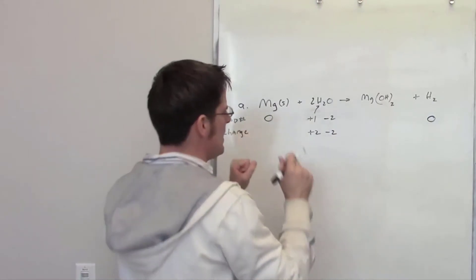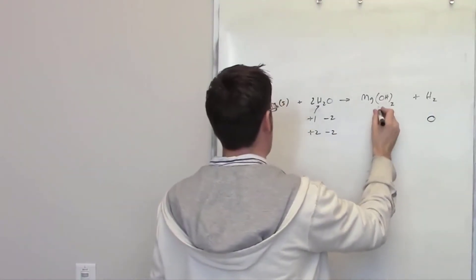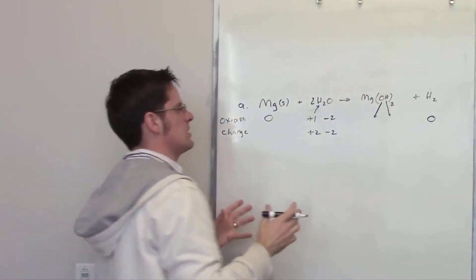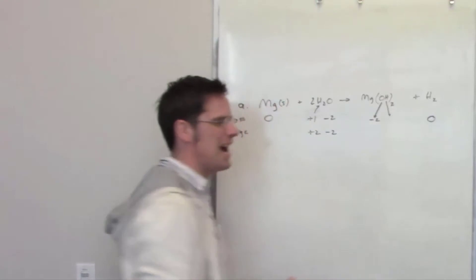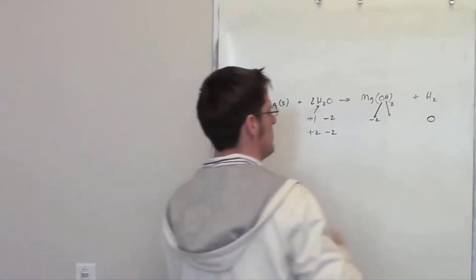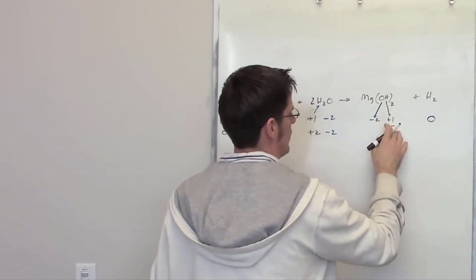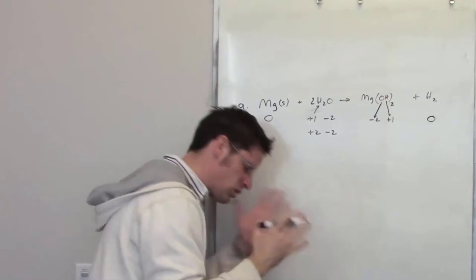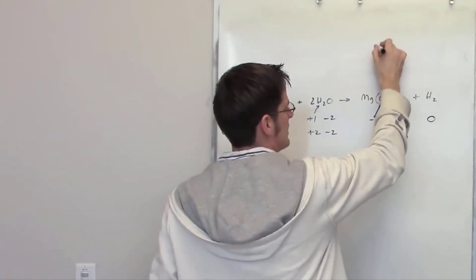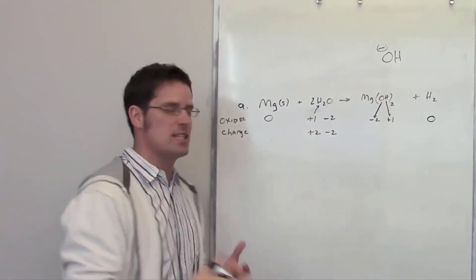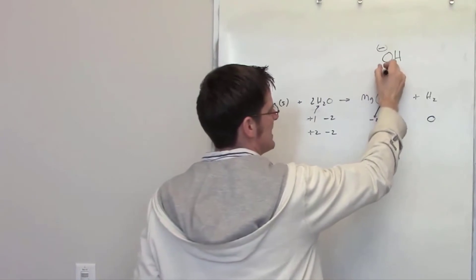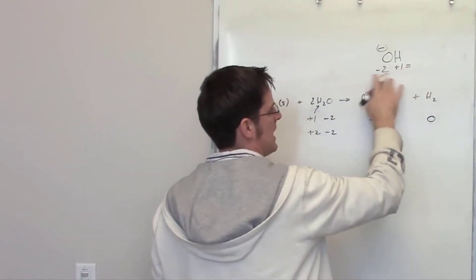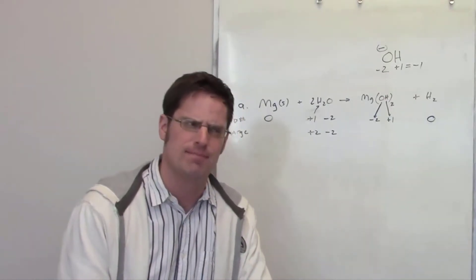Now this magnesium might be a little bit of a mystery. Let's pick out each of the elements — I've got oxygen and hydrogen here. Oxygen has an oxidation number of -2 because it's bonded to hydrogen, a non-metal. Hydrogen bonded to a non-metal has an oxidation number of +1. This makes sense: if you've got -2 on oxygen and +1 on hydrogen, they add up to -1, which is exactly the charge of hydroxide — OH⁻ is a polyatomic anion with a -1 charge, and that's consistent.